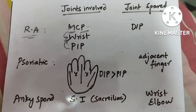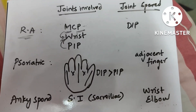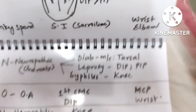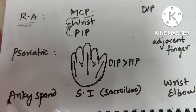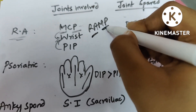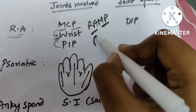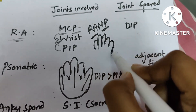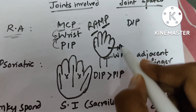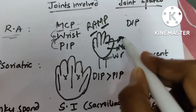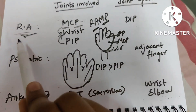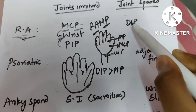Under inflammatory arthritis, greater than one joint involvement includes rheumatoid arthritis and then the PAIR conditions. For rheumatoid arthritis, remember the mnemonic RAMP: the most common joints involved are MCP (metacarpophalangeal), wrist, and PIP (proximal interphalangeal). In a hand diagram, wrist, MCP, and PIP are involved in rheumatoid arthritis, whereas the DIP (distal interphalangeal) joint is spared.